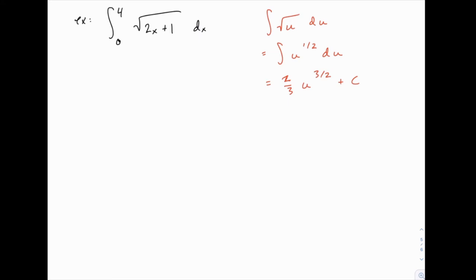So we want to replace the whole 2x plus 1 with u, which means that du would be 2 dx. As we've done many times, we have u ready to be replaced, but what's left is just dx. We don't have this 2 anywhere, so we're going to divide it just to solve for dx, the part that we do have. So we have one-half du equals dx.